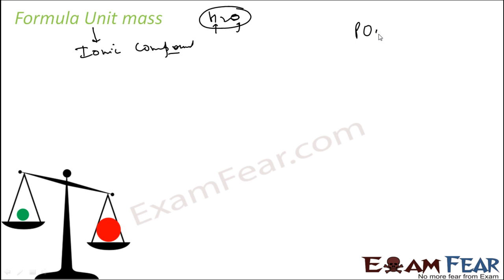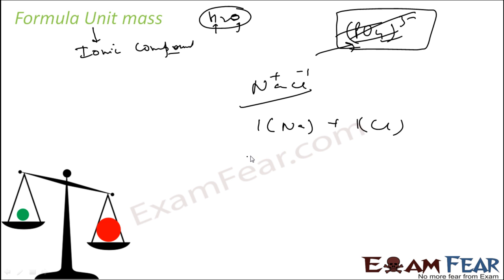For example, you have NaCl. NaCl is an ionic compound, right? I want to find the formula unit mass. So there is one sodium plus one chlorine. One sodium is what? 23. One chlorine is what? 35.5.